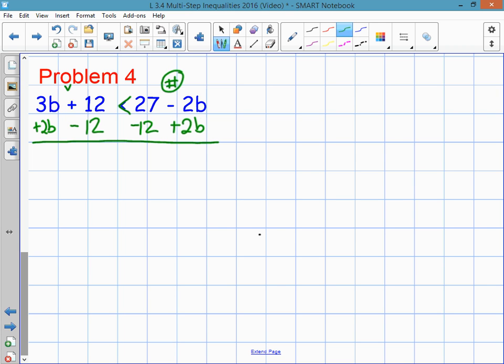And just like you'd expect, the variables cancel each other out. The numbers cancel each other out. 3b plus 2b is 5b. 27 minus 12 is 15. And that's still less than in between. The last step is to divide both sides by 5. And I get b and 3. Now, I have not divided by a negative number. I have not multiplied by a negative number. So my inequality stays the same. I don't flip it.